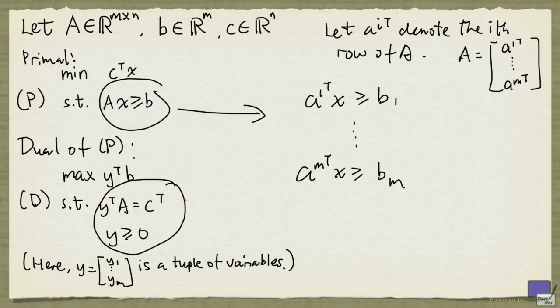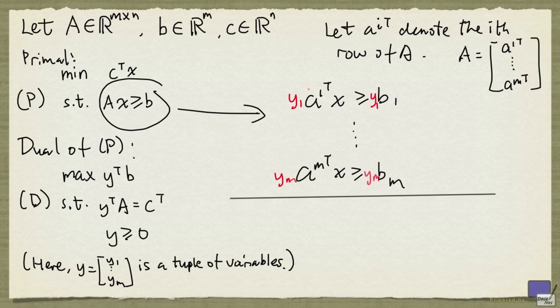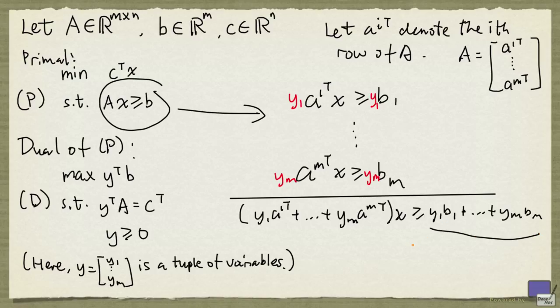Now if we take a y that satisfies these, since each component is non-negative, these inequalities must hold. And so the sum of the left-hand side must be at least the sum of the right-hand side. That gives us the following.